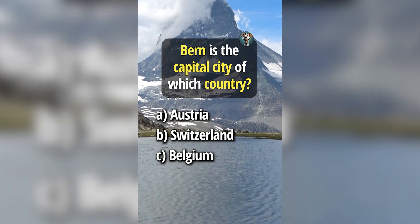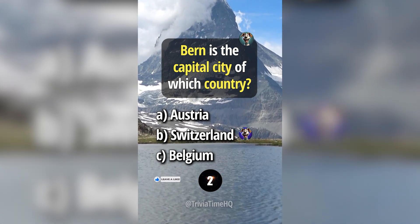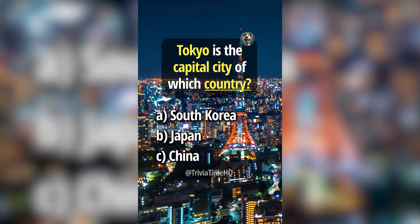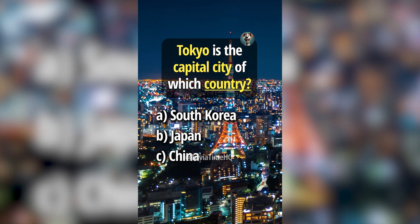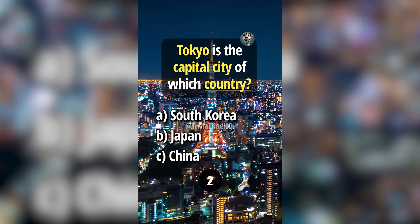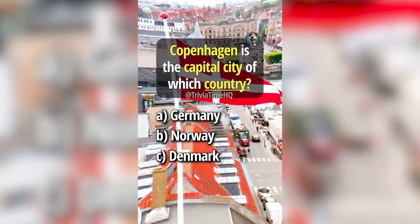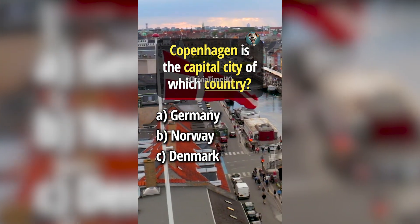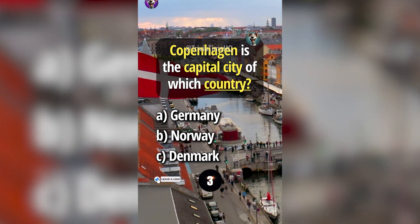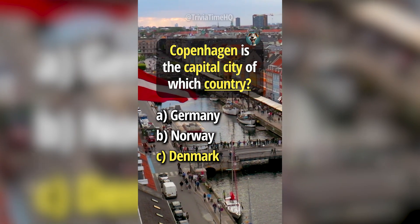Bern is the capital city of which country? Answer B, Switzerland. Tokyo is the capital city of which country? Answer B, Japan. Copenhagen is the capital city of which country? Answer C, Denmark.